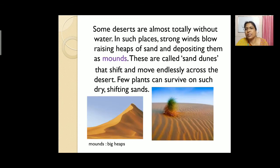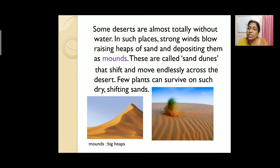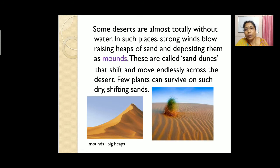Some deserts are almost totally without water. In such places, strong winds blow, raising heaps of sand and depositing them as mounds. These are called sand dunes that shift and move endlessly across the desert. Few plants can survive on such dry, shifting sands.